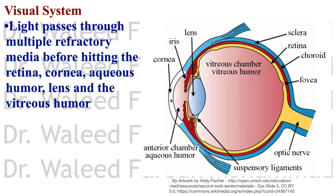So again, the cornea has the highest refractive power, then the aqueous humor, then the lens, and then the vitreous humor that focuses the entering light on the fovea. These are the refractory media that the light passes through in vision.